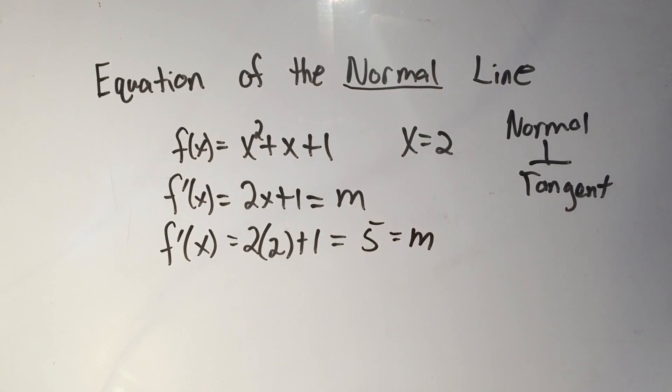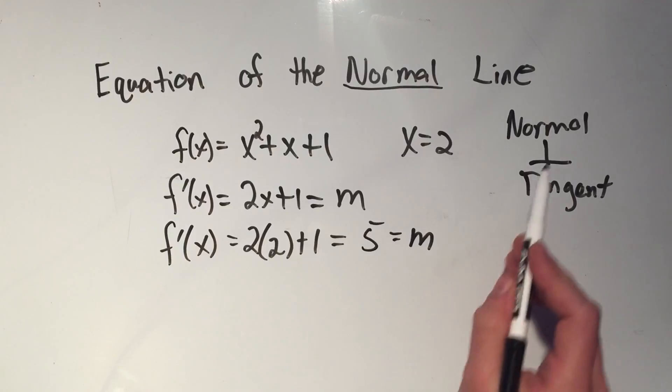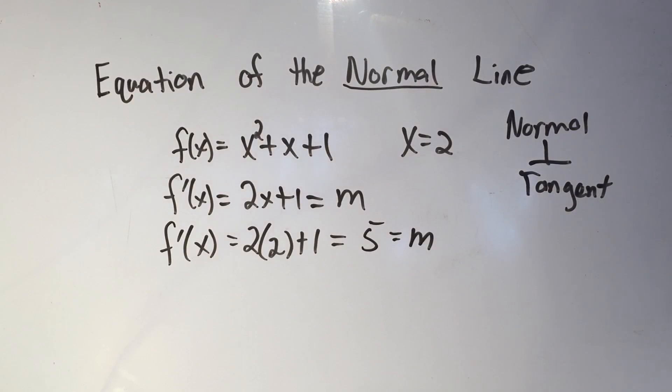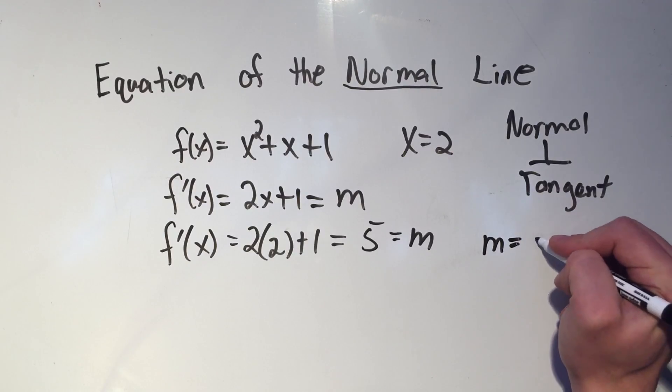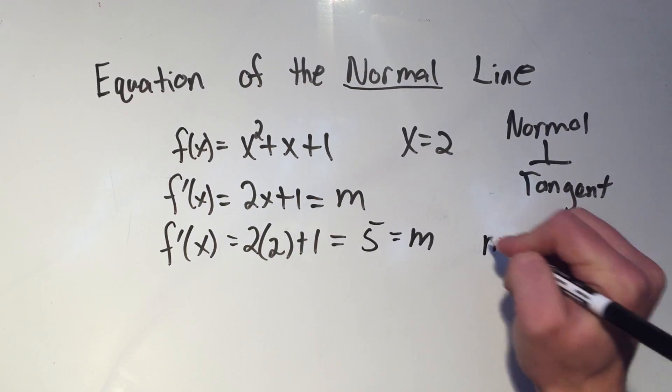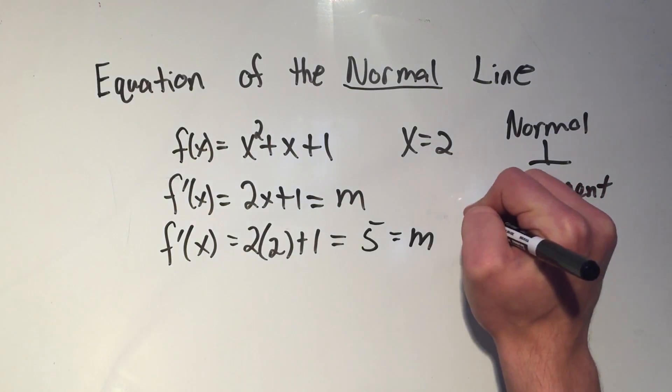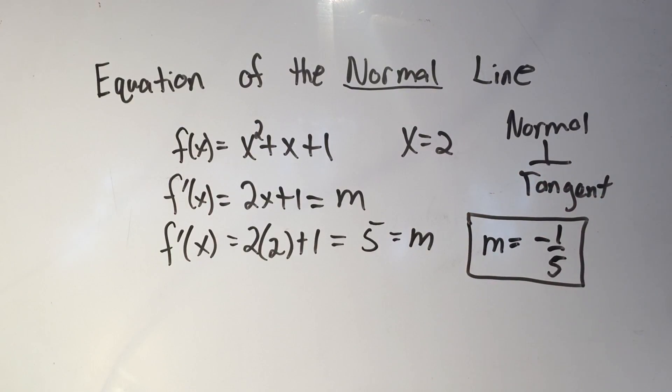Now that's the slope of the tangent line. If I want the slope of the normal line, since the normal line is perpendicular to the tangent line, perpendicular lines have negative reciprocal slopes. So my slope is not 5, it's negative 1 over 5.